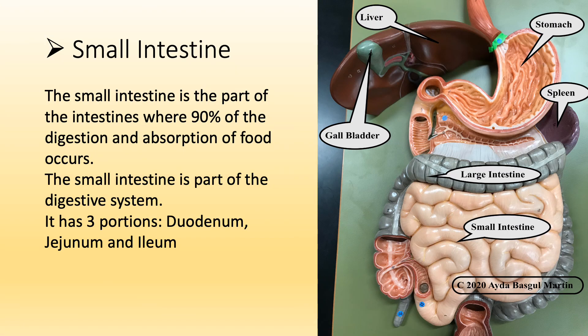The small intestine is the part of the intestines where 90% of the digestion and absorption of food occurs. The small intestine is part of the digestive system. It has three portions: duodenum, jejunum, and ileum.